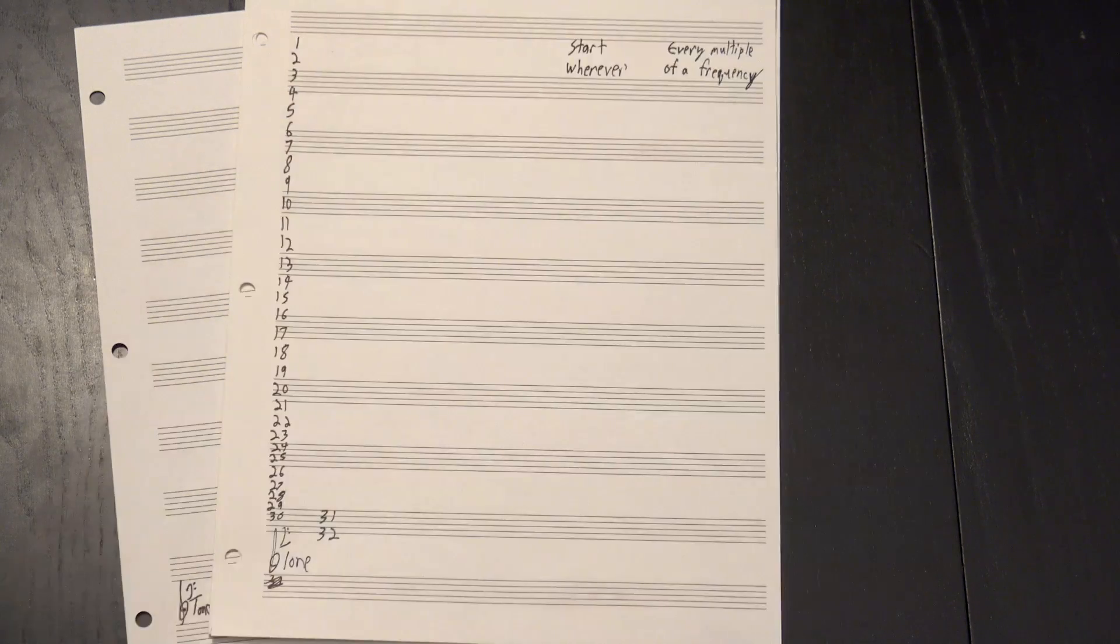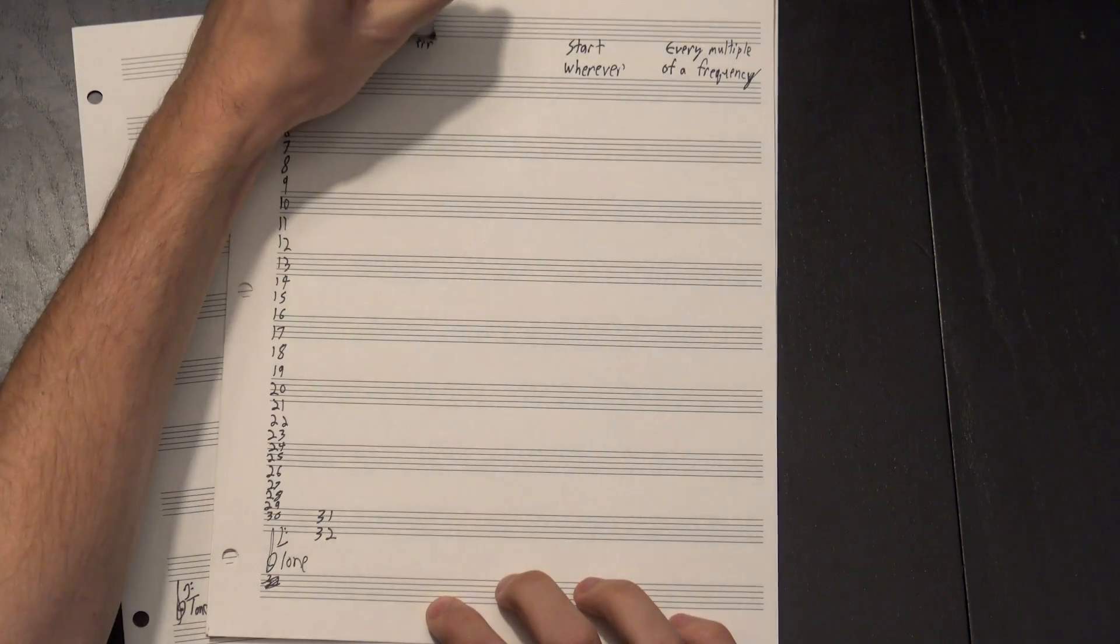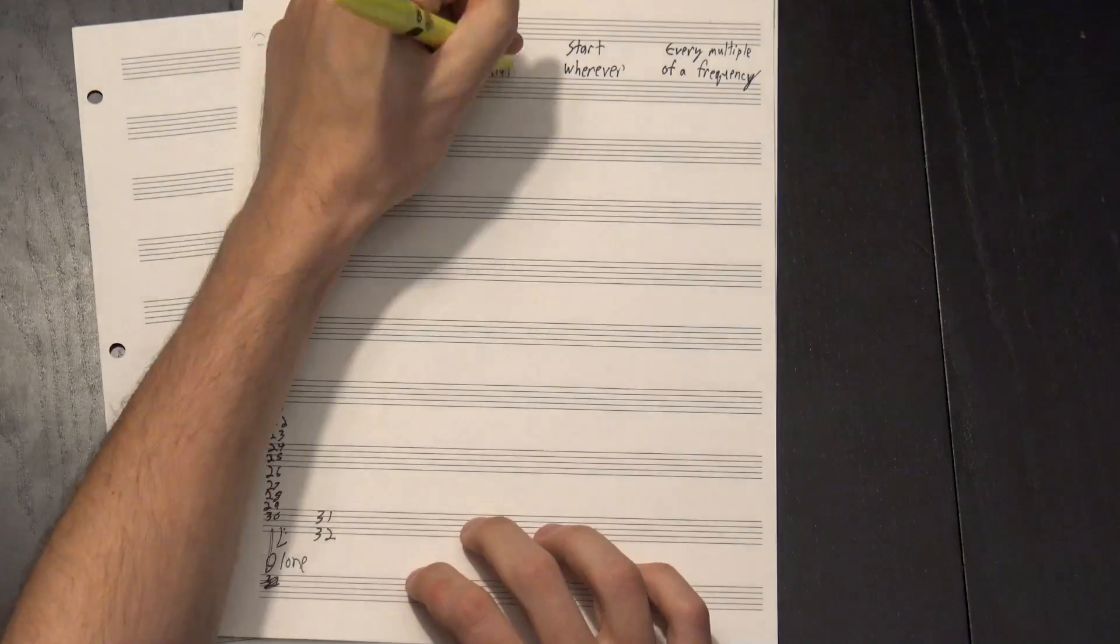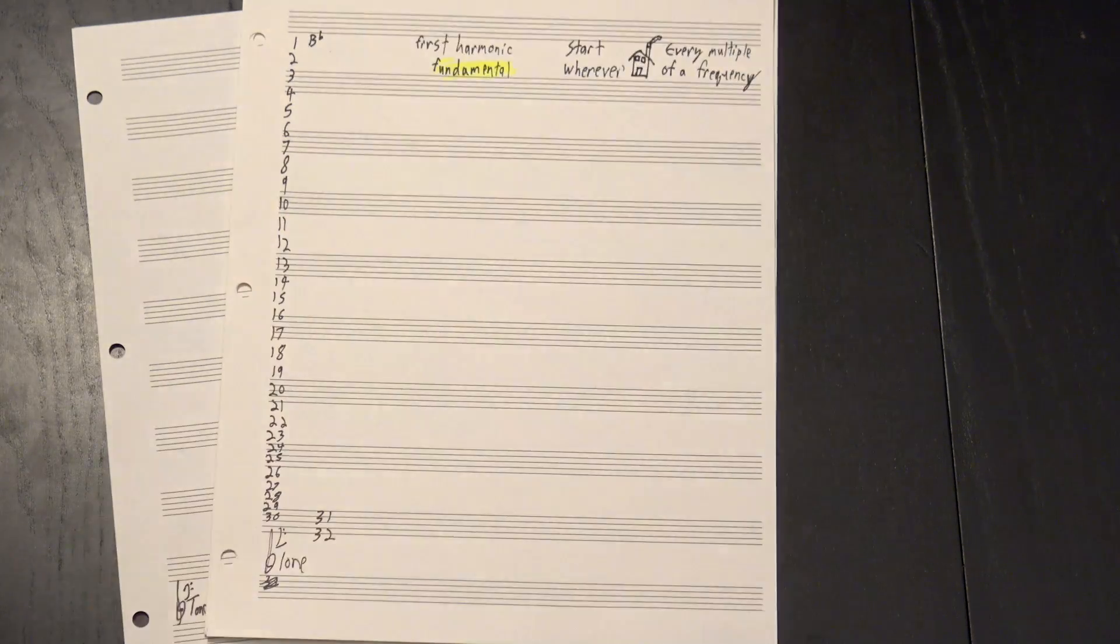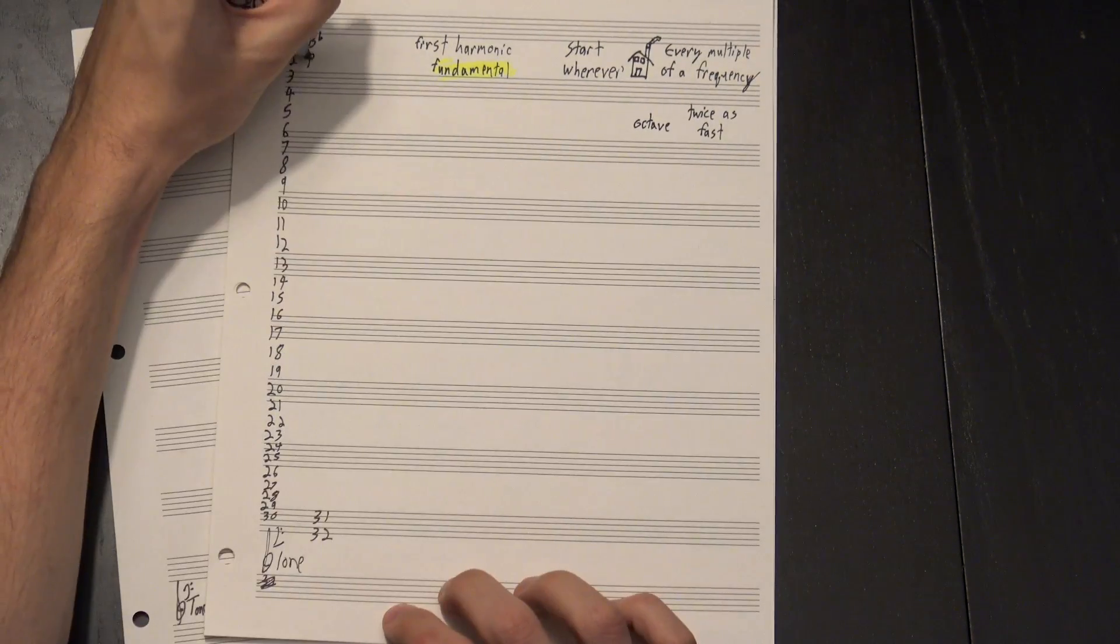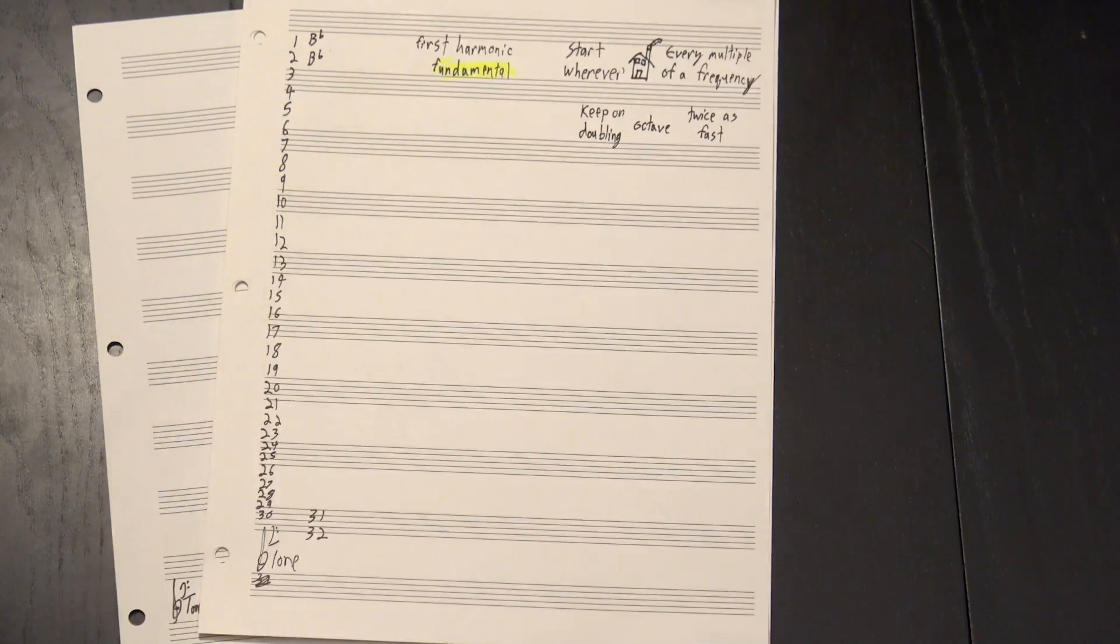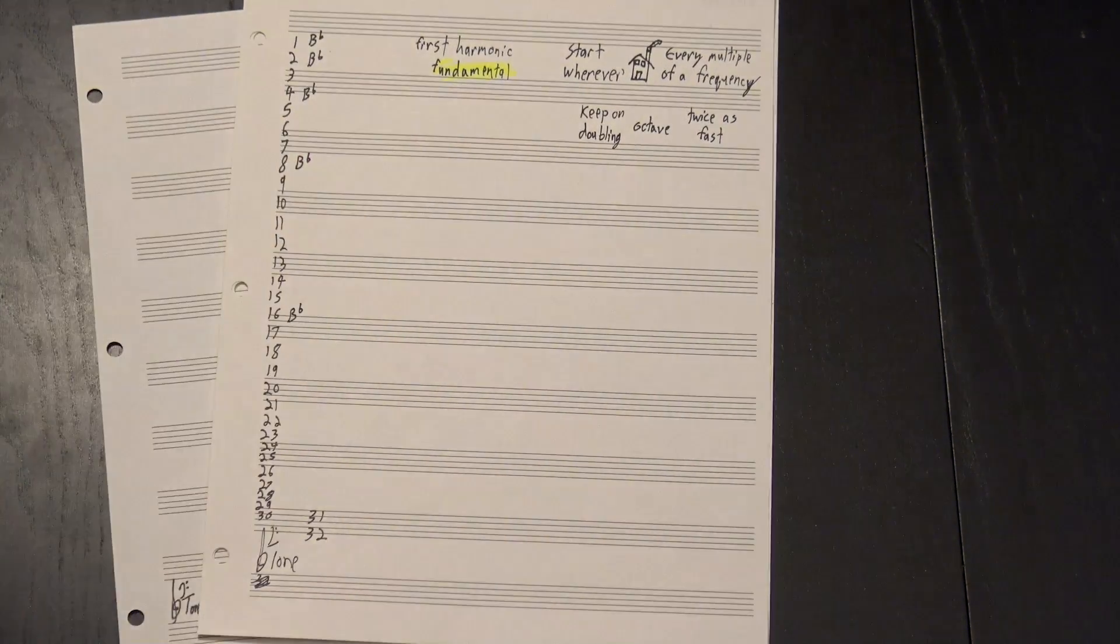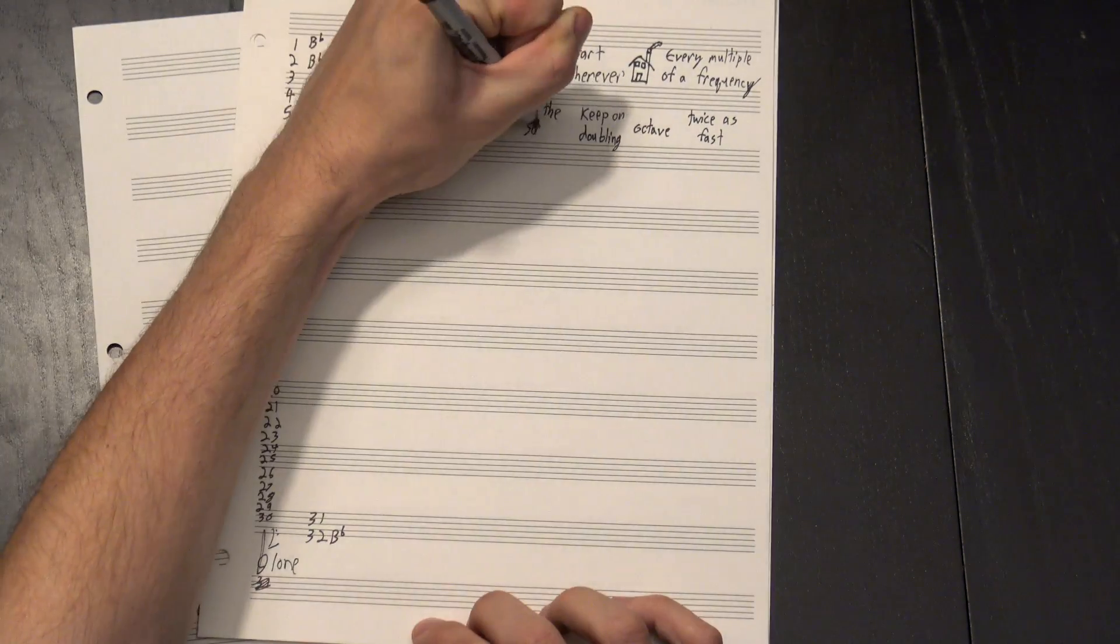You can start with any note you want. I like Bb. This is gonna be our first harmonic, also called the fundamental because the series is built on top of it. The second harmonic is twice as fast, which as we mentioned is an octave, making this another Bb. In fact, we can double that again to get the fourth harmonic, and the eighth, sixteenth, and thirty-second too. They're all Bbs.